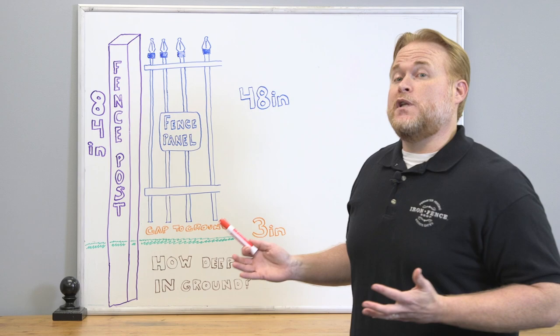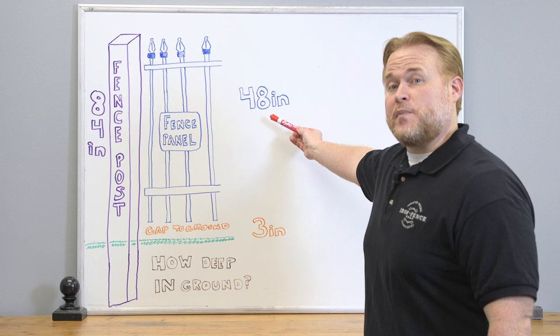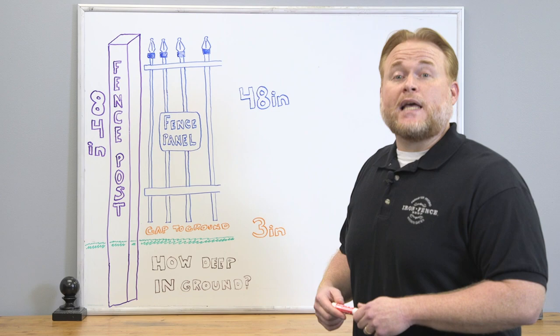There's three elements we need to know when calculating your post hole depth. That's the length of your post, the height of your fence panel, and the measurement of the gap between the bottom of the panel and the ground.